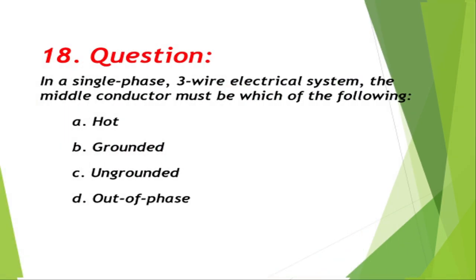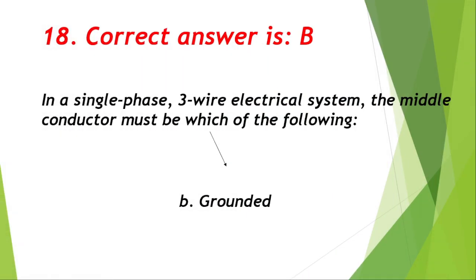Question number 18: In a single-phase three-wire electrical system, the middle conductor must be which of the following? A. Hot, B. Grounded, C. Ungrounded, D. Out of phase. Correct answer is B, grounded.